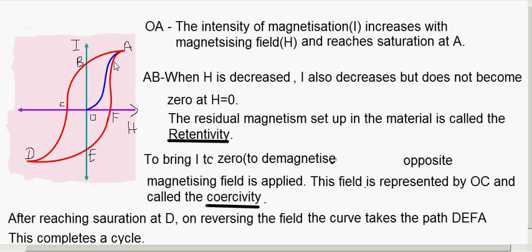The hysteresis loop is very important in selecting material for electromagnets and permanent magnets. By determining the area under the loop, we can select the right material. For a permanent magnet, the material should have high retentivity, high coercivity, and high permeability. For an electromagnet, it should have low retentivity, because electromagnets are not permanent — we don't want to retain residual magnetism after H becomes zero.